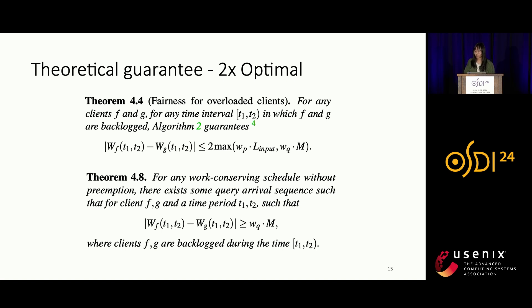For this algorithm, we prove its fairness properties with theoretical guarantees. For overloaded clients, we prove that for any clients f and g, and any time interval T1 to T2 in which both f and g are backlogged, the algorithm guarantees that the service difference between the two clients is smaller than an upper bound — which is a constant given fixed server parameters. We also prove a lower bound stating that for any work-conserving schedule without preemption, there exists some query arrival sequence such that the service difference between the two clients must exceed a lower bound.